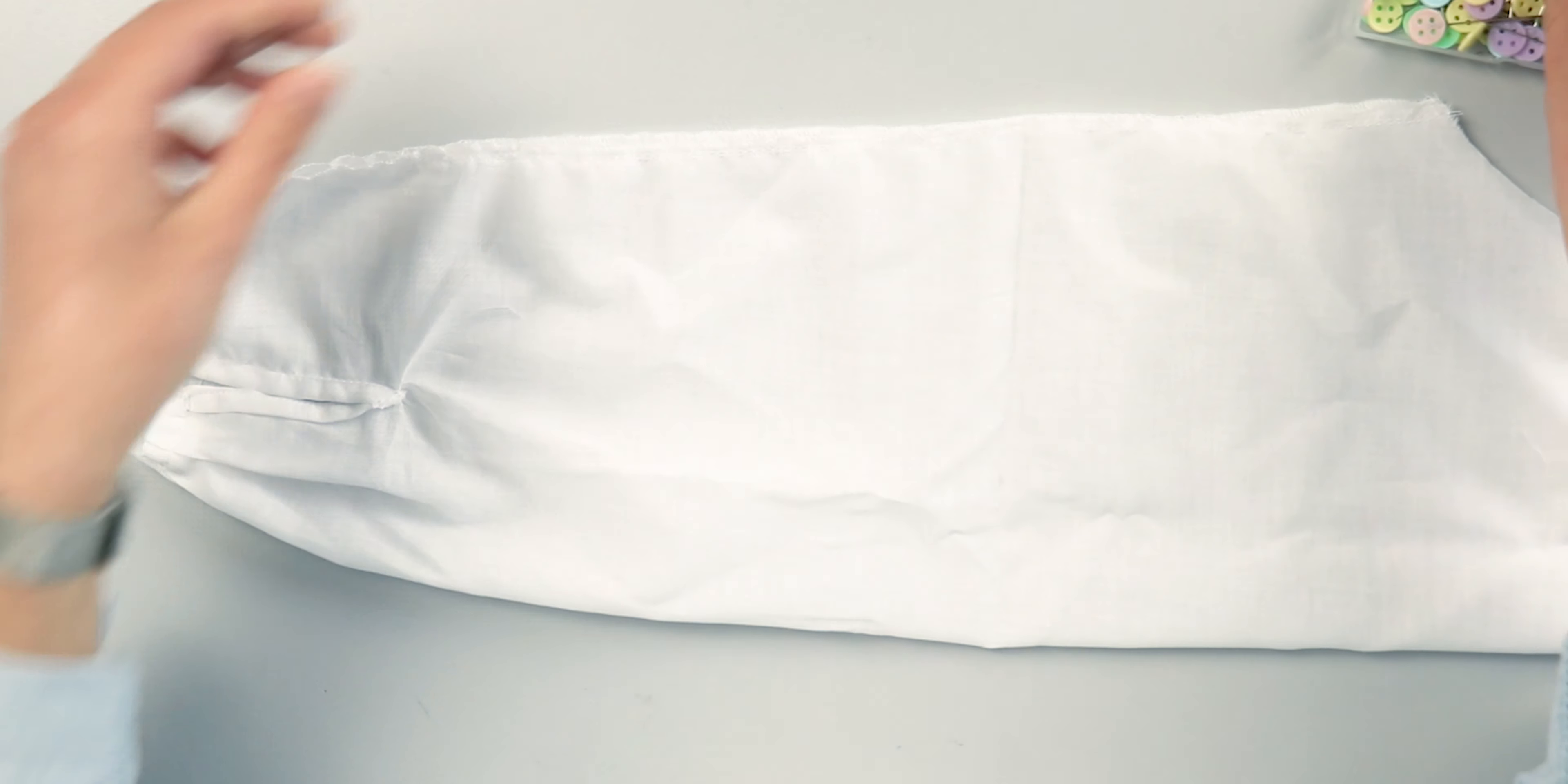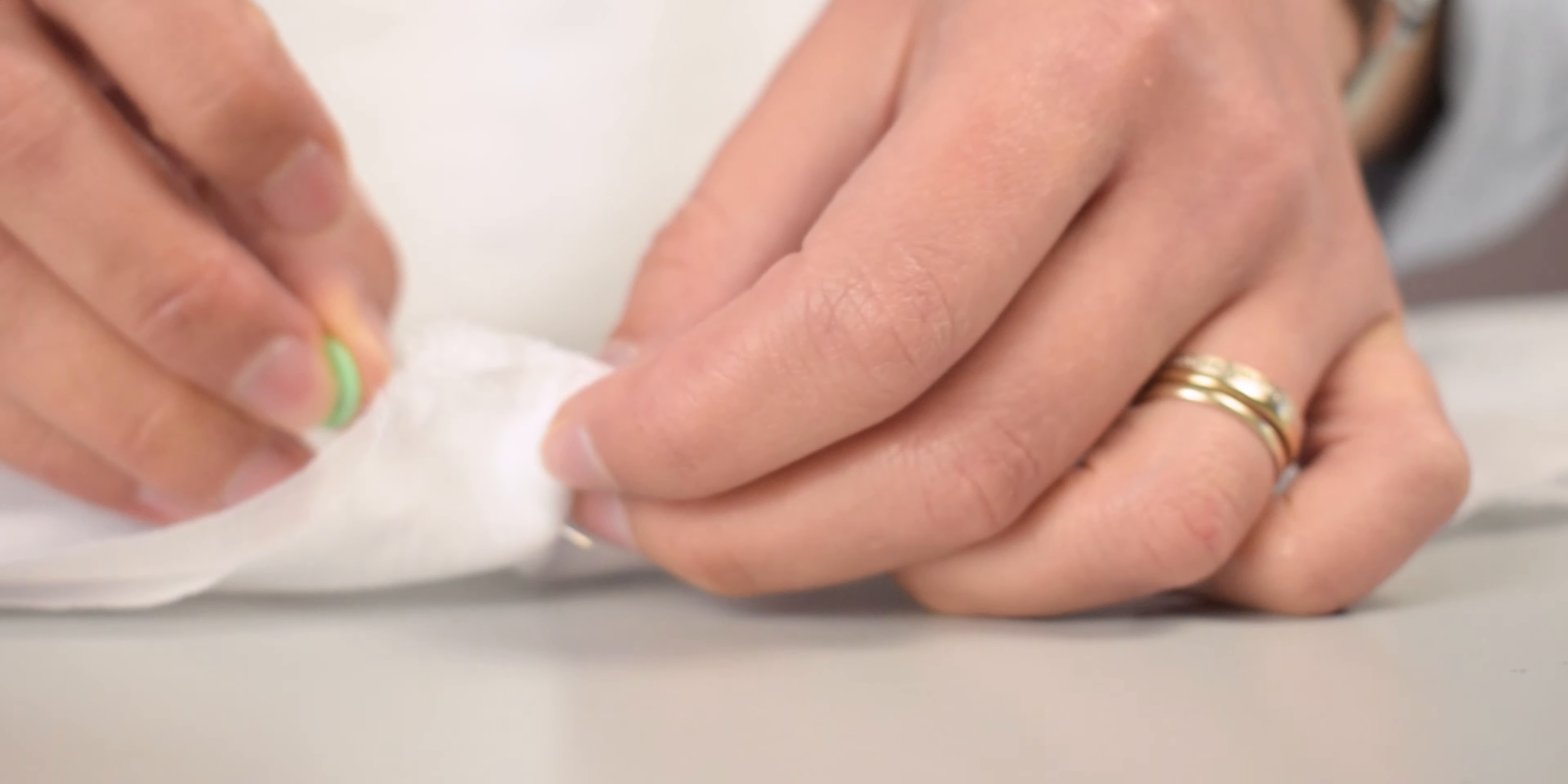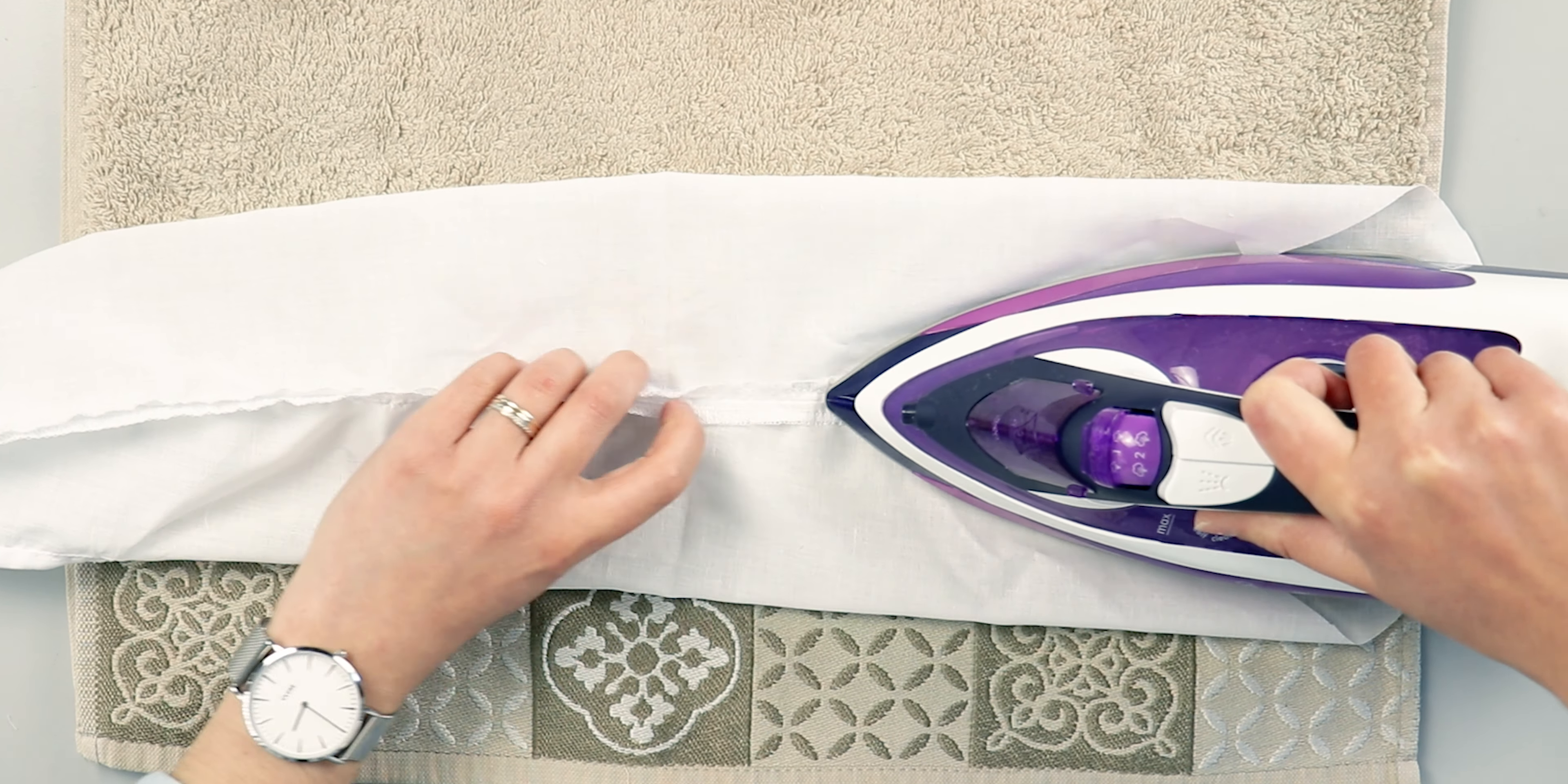Pin the sides of the sleeves and then sew them. Open the seam allowance and iron to flatten it.